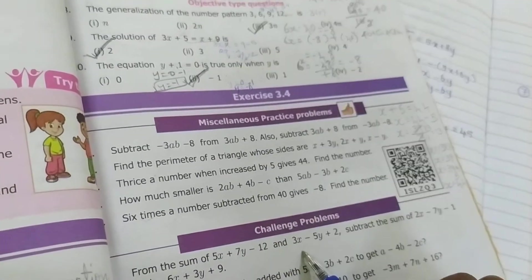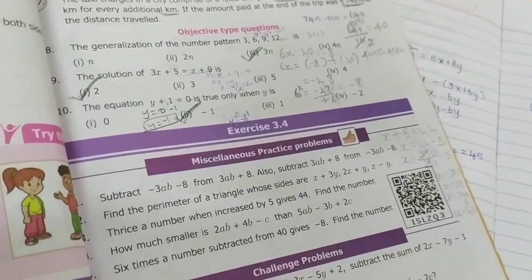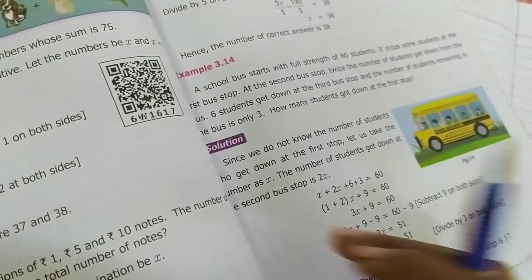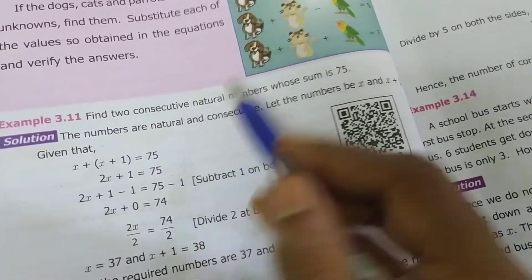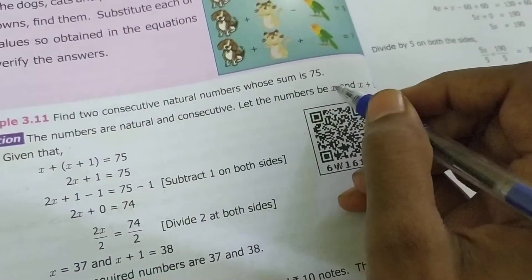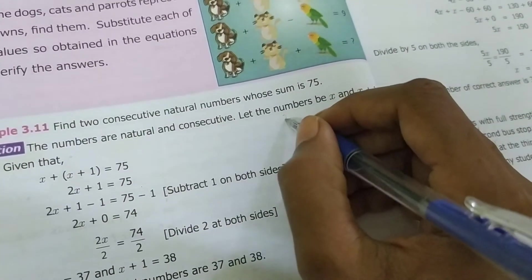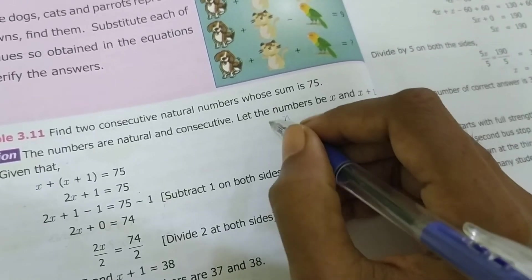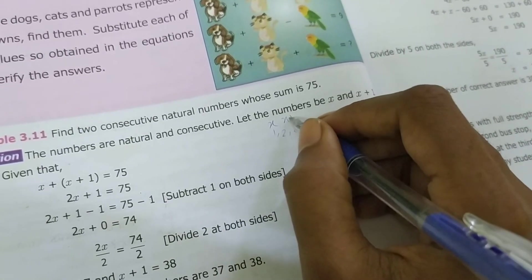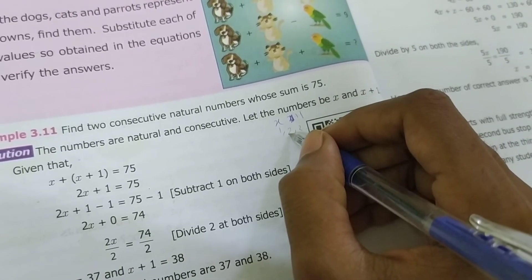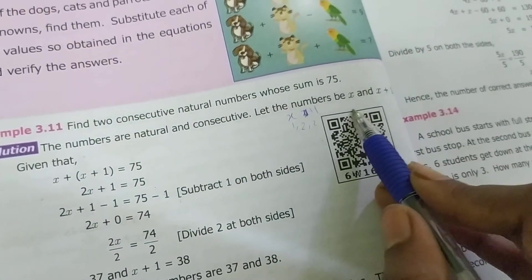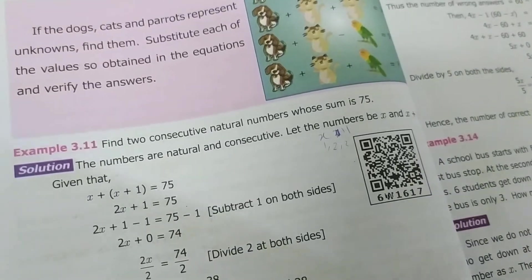Balance miscellaneous and challenging problems for your homework. Then in example 3.11, consecutive natural numbers. Natural number means 1, 2 like this. So X, X plus 1. 1, 2, 3 is your natural number, right? So first one X means next one X plus 1. Why? Because I am adding 1 plus 1, I am getting 2. That's why they are taking X and X plus 1.